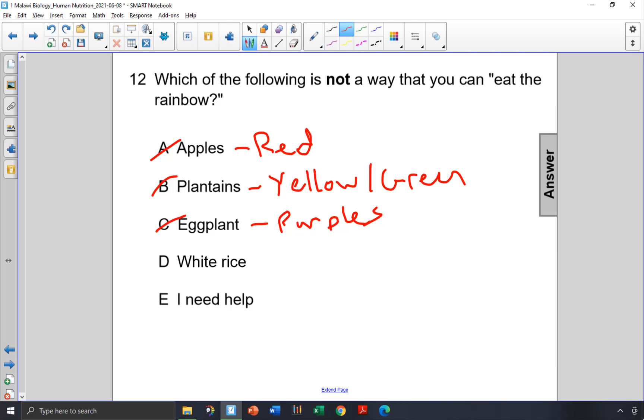White rice, that's a refined grain. And white, that's actually all colors from a physics standpoint. So it's not really part of the rainbow spectrum. So let's go with choice D, white rice.